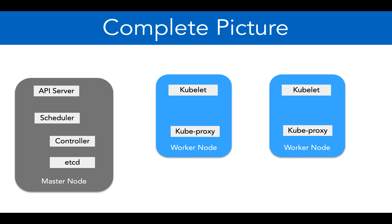On the worker node we have kubelet and kube-proxy. Kubelet talks to the API server and launches pods most of the time. Kube-proxy is used to communicate with the pods either externally or internally, which we'll see in the services section. We'll discuss kube-proxy in detail there - we'll see the usage and implementation of kube-proxy, why it is needed, and what its importance is.